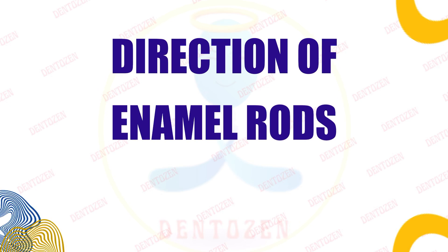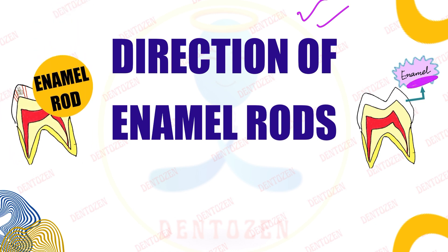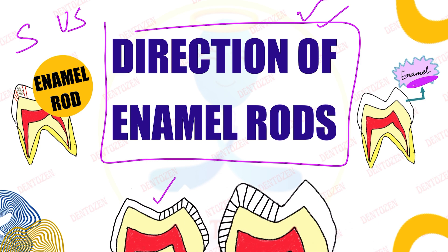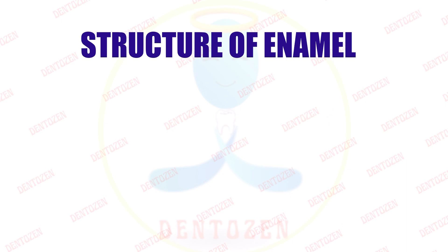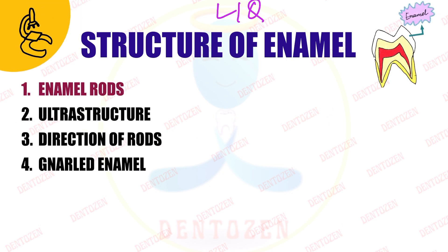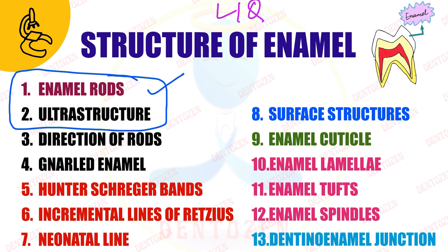Welcome back. Today we have a new video on the direction of enamel rods. We are continuing with our lectures on enamel — we have already discussed the structure and ultrastructure of enamel rods in previous videos. In today's video we are going to cover the third part: the direction of enamel rods — where they start, what is the finishing point, and at what angles.